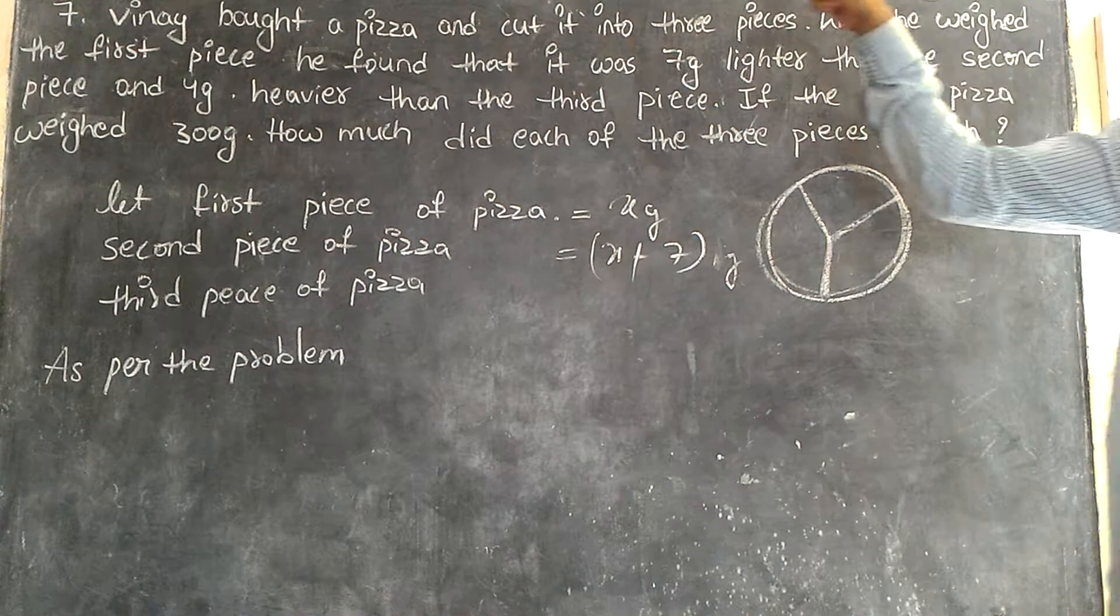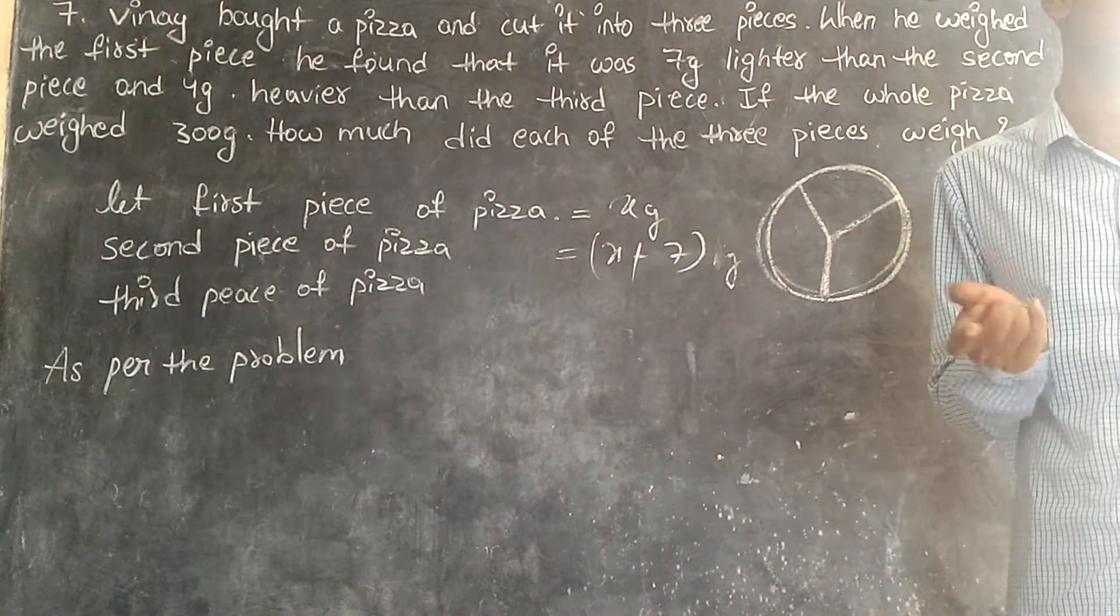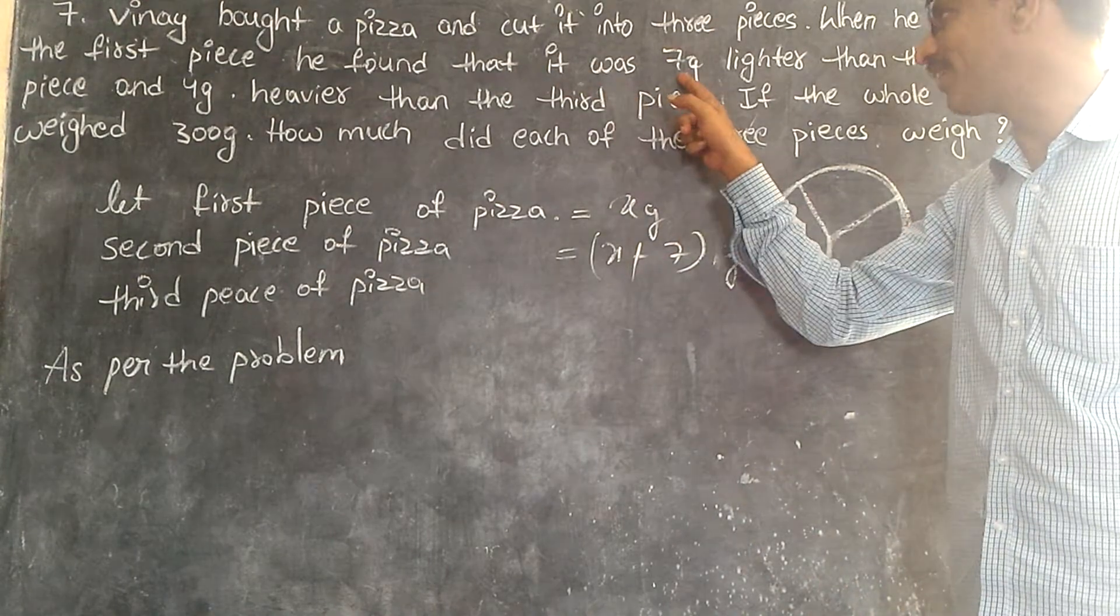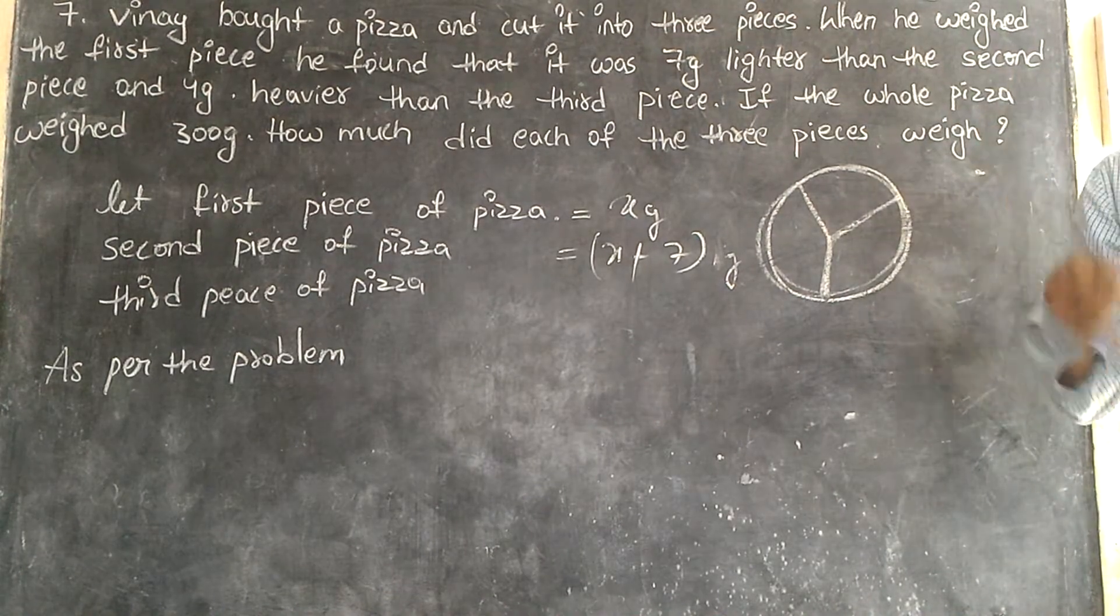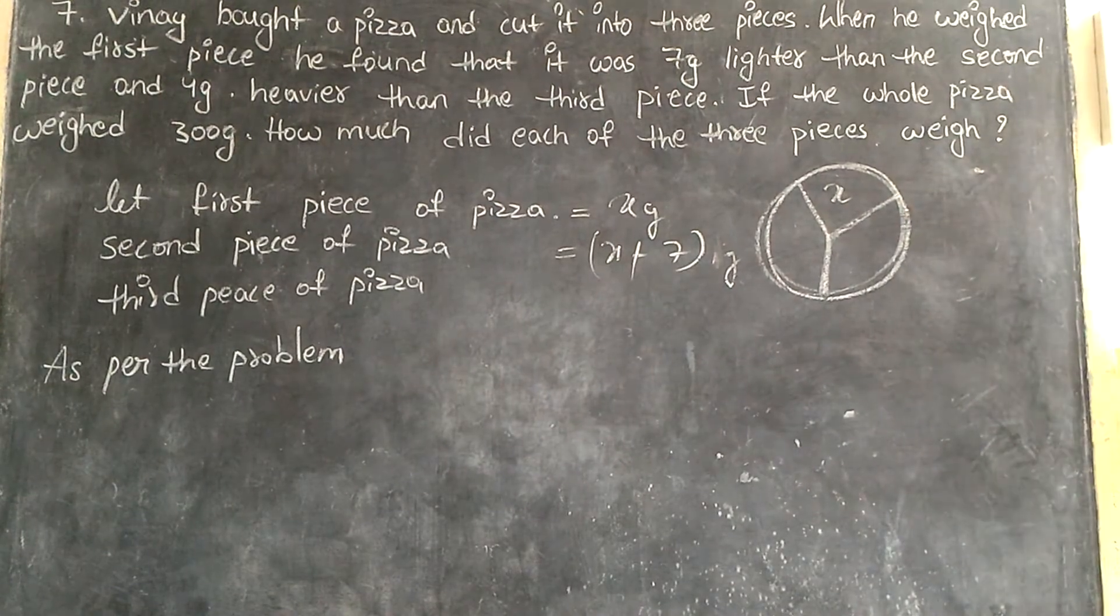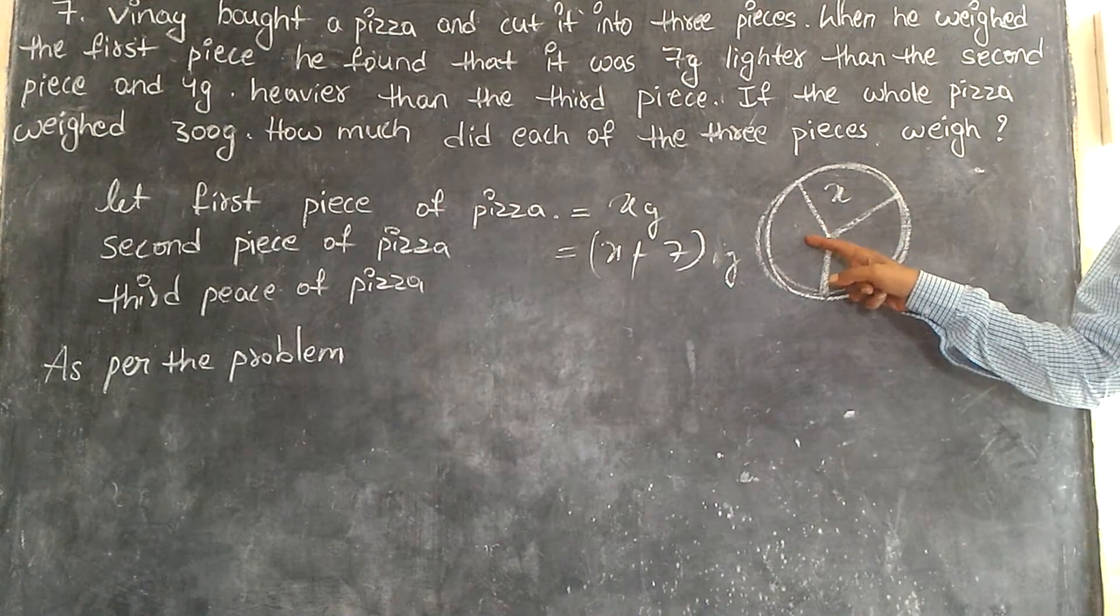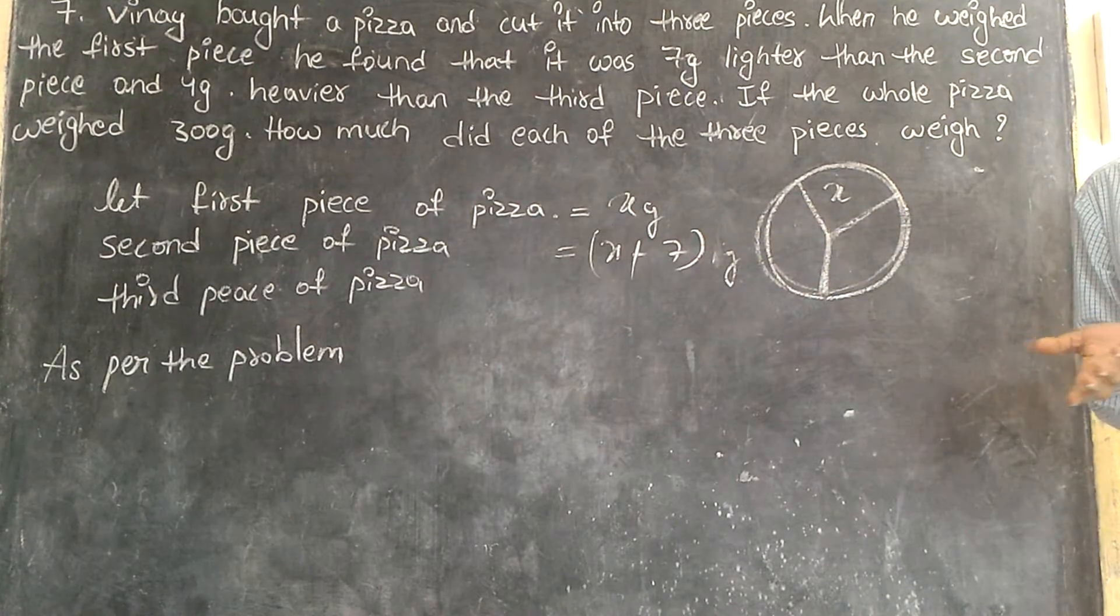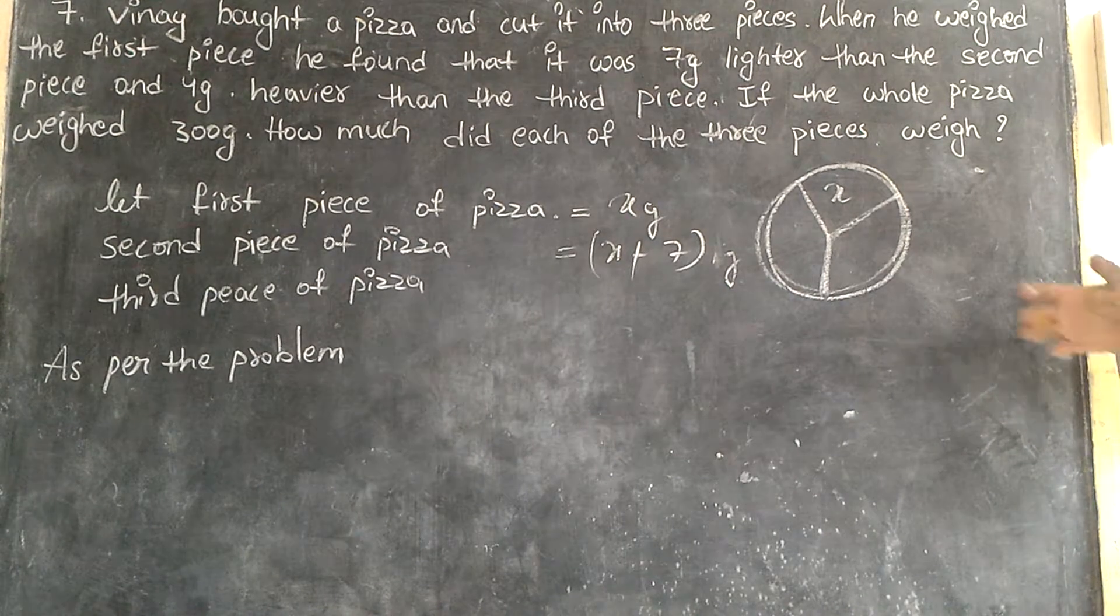When he weighed the first piece, he found that it was seven kilograms lighter than the second piece. Suppose the first piece is X, the second piece must be X plus seven. That means this is the second piece, so seven grams more than the first piece.